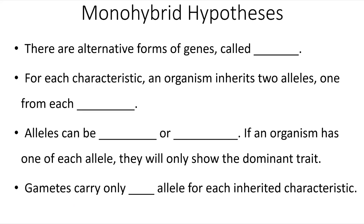First, Gregor Mendel proposed that there are alternative forms of genes called alleles. For instance, for the flower color gene, there's the purple allele and the white allele. Or for humans, for hair color, there might be a blonde allele, a brown allele, or a black hair allele.